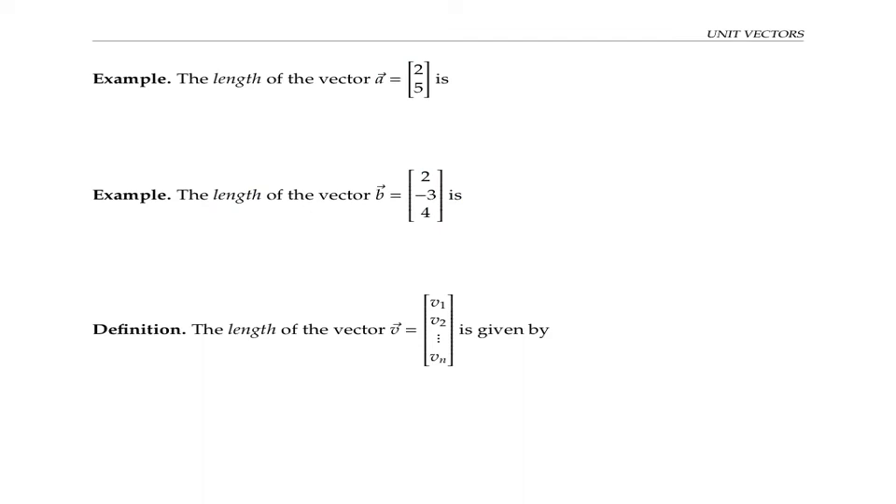Our first example is a vector a with two entries, so dimension two. To find its length, which I'll write with double bars, although some people write length of a vector just with single bars like absolute value, we take the square root of two squared plus five squared, which works out to the square root of 29.